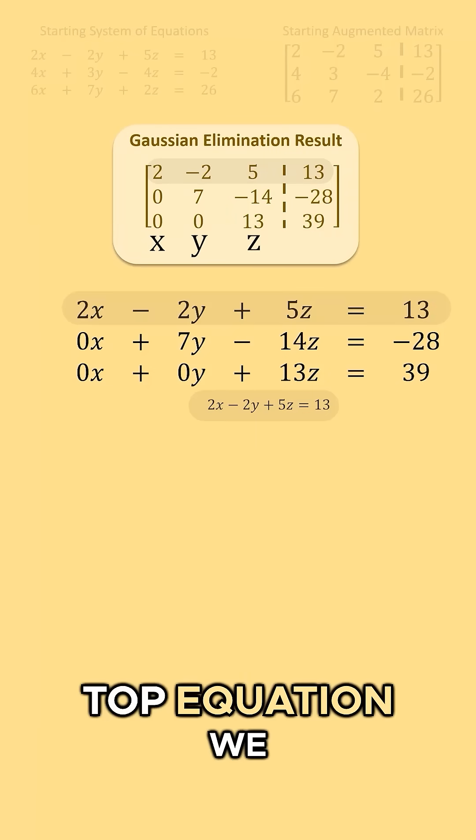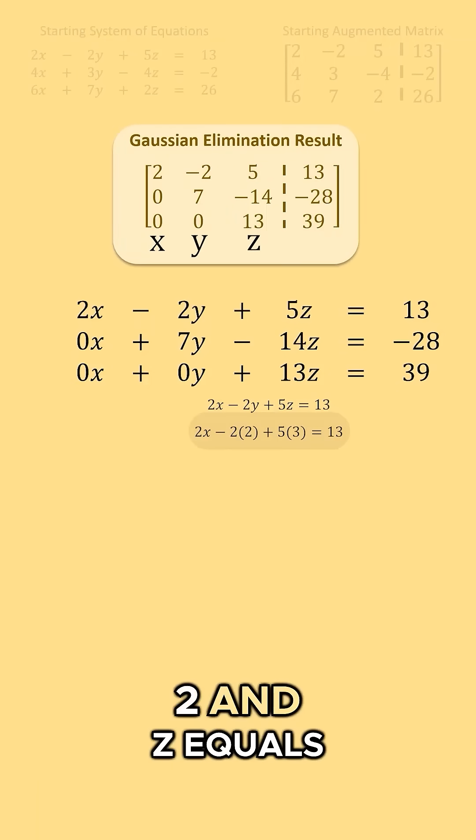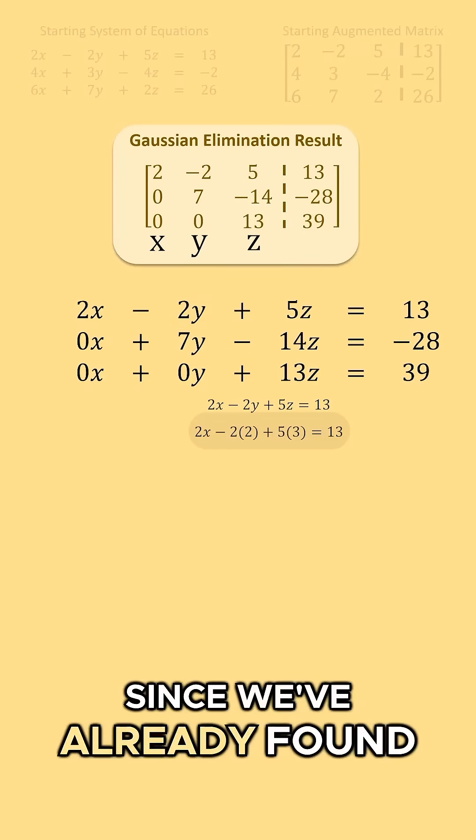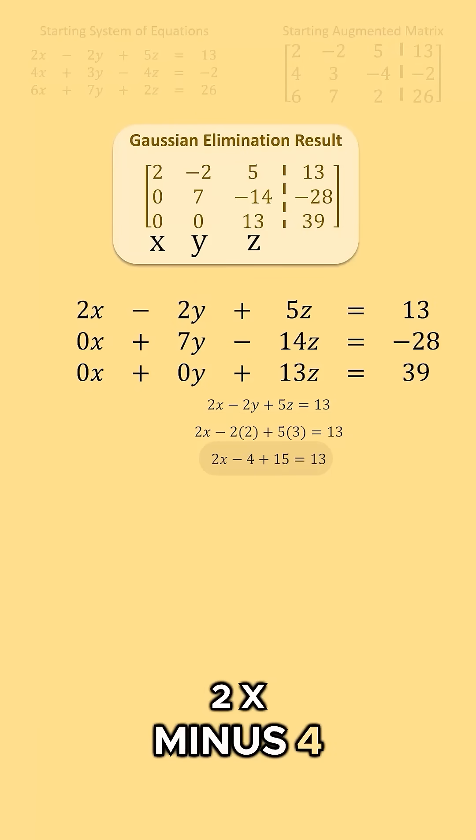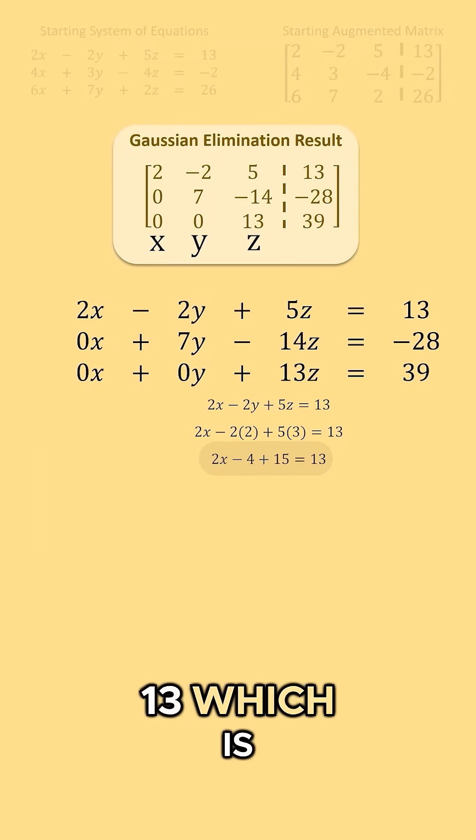Finally, for our top equation, we can sub y equals 2 and z equals 3 into it. This will give us 2x minus 4 plus 15 equals 13, which is 2x plus 11 equals 13.